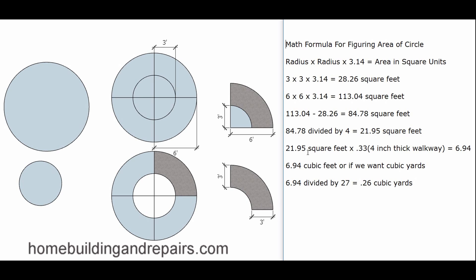To find the cubic feet of the walkway, we take the surface area in square feet and multiply it by the thickness of the walkway. To find the decimal, divide the depth in inches by twelve. Point thirty-three times the square feet gives us the cubic feet — 6.94 cubic feet is what we would need to fill this area. For cubic yards, divide by twenty-seven; that gives us point twenty-six cubic yards to fill this section with concrete.